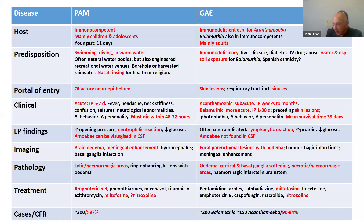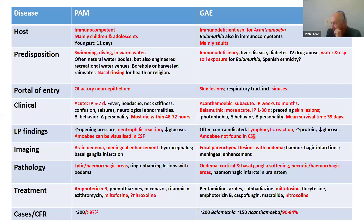For PAM, LP findings are generally a neutrophilic reaction, though somewhat variable. Importantly, if you look at the CSF on a wet prep, you may be able to see active amoebae — but this requires wet prep microscopy of CSF, which is not usually done and requires clinical suspicion to request. For GAE, LP is often contraindicated because of high intracranial pressure and risk of herniation. It tends to be a lymphocytic reaction, and you don't find amoebae in the CSF.